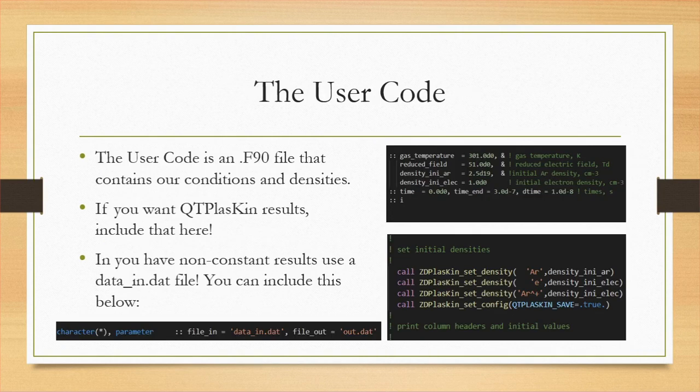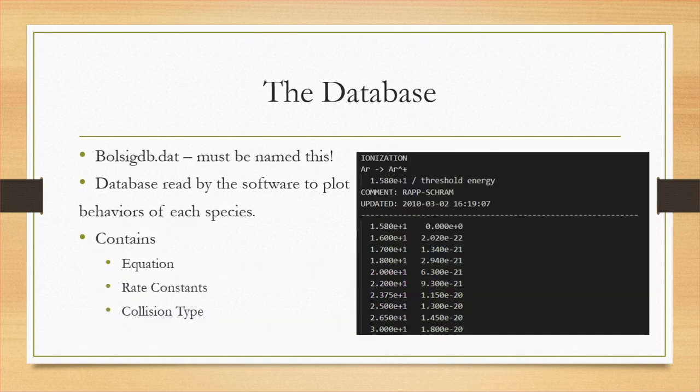Next is the user code. This is where you list your initial densities and parameters. If you want to use QT Plaskin, this is where you will list your results output. This is also where you'll handle conditions that aren't constant — the easiest way to work with that is by using a data.IN.dat file. The database is a list of rate constants and specific reactions, and the database readers I mentioned earlier will go to this file to run the software.